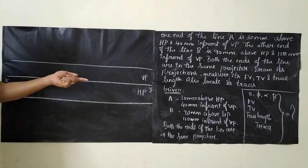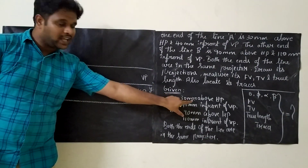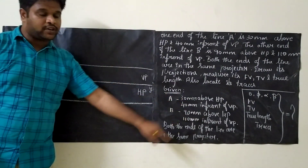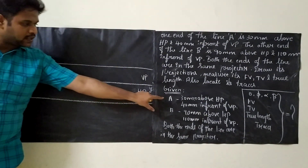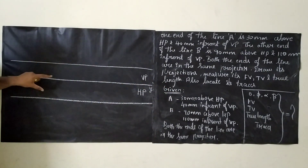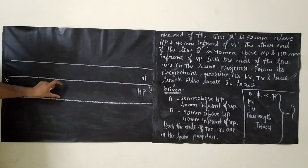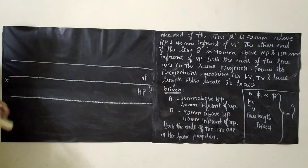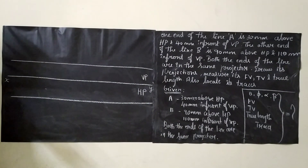Now going to the question. Point A will be 30 mm above HP and 40 mm in front of VP. From the reference line, take 30 mm and draw a straight line — that is the locus of A'. The distance between the reference line and that line is 30 mm above, and 40 mm below. On that line, you can mark A' and A anywhere, but A' and A must lie on the same projector line.